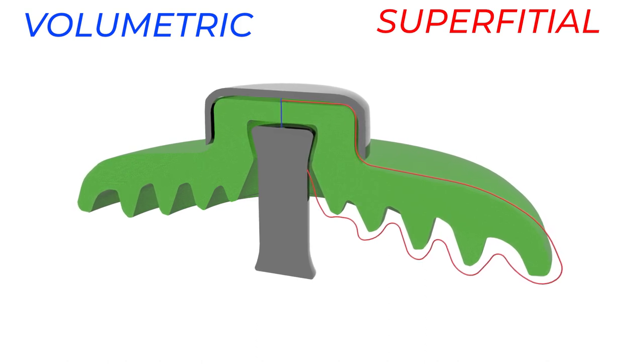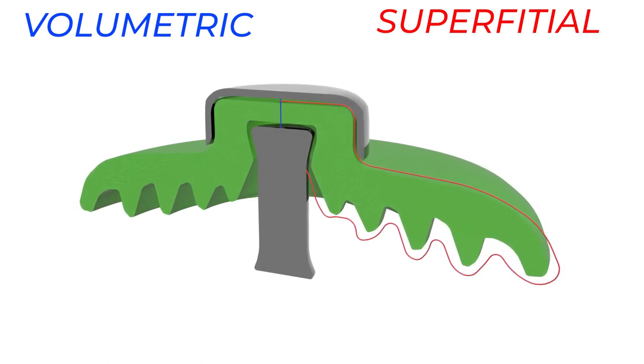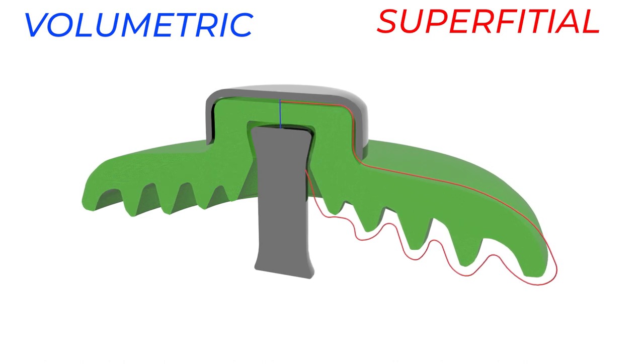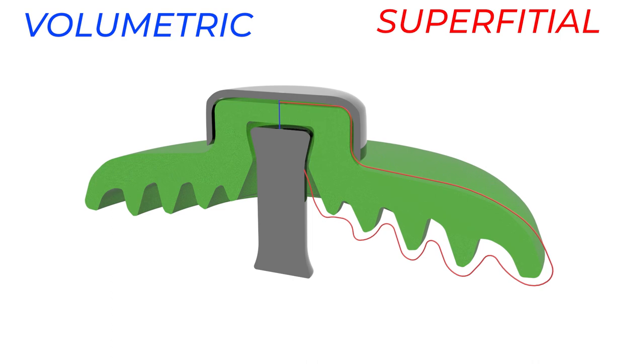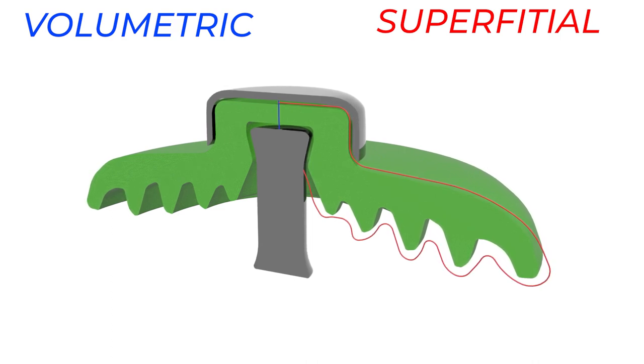With this design, superficial currents won't flow practically as the distance they need to cover to flow from one metal to the other is very high. Volumetric currents don't need much distance for avoiding them to flow. So this distance is enough.